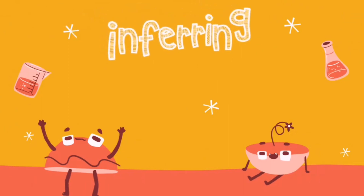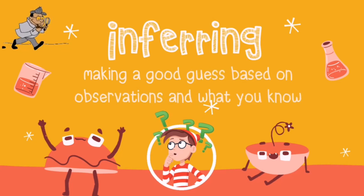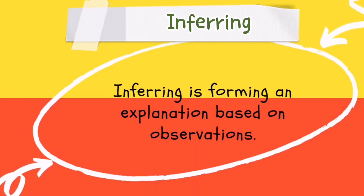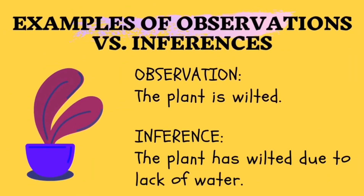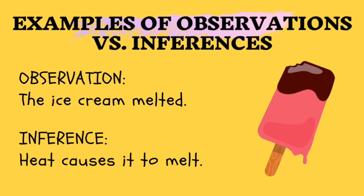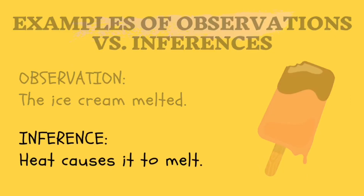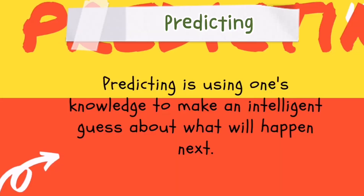The next science process is inferring. When we say inferring, this is making a good guess based on observations and what you know. In inferring, you form an explanation based on your observations. It is also a process of giving logical meaning to an observation. Here are some examples of observation and inferences. For observation: the plant is wilted. For inference: the plant has wilted due to lack of water. Another observation: the ice cream melted. As an inference: the heat causes it to melt. When you observe that his car stopped, as an inference, you may say that the car stopped because it was out of gas.